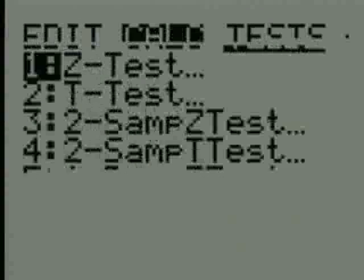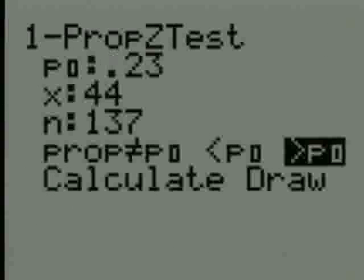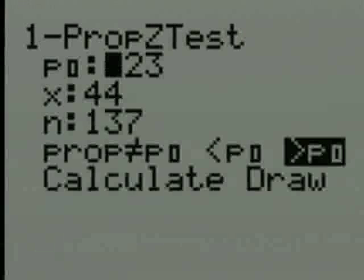If I go to stat, test, and go down to option 5, 1-prop z-test. p-not, this is the way the calculator asks for pi. What is the value for the proportion under the null hypothesis? What was 0.23.